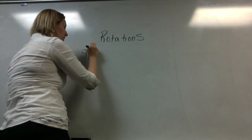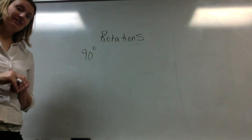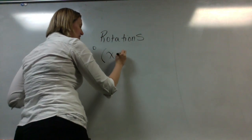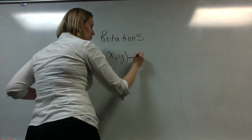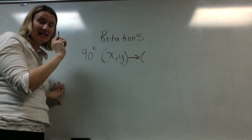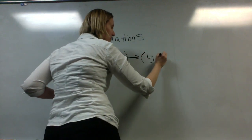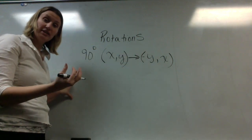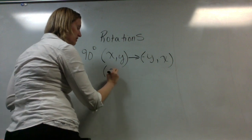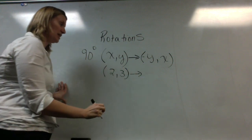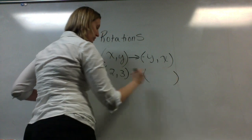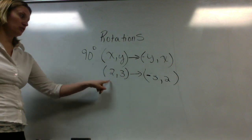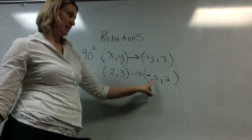If I want to rotate a coordinate point 90 degrees, the easiest way to do it is to remember this rule. I take the coordinate point that I have and get my new coordinate point — if I want to rotate it 90 degrees, I switch the x and y, and I do the opposite of the y value. For example, if I have the coordinate point (2, 3), rotating that 90 degrees, I switch x and y and do the opposite of the y value, so it would become (-3, 2).